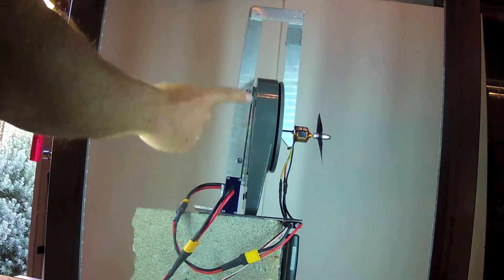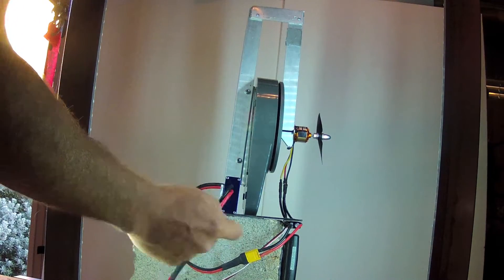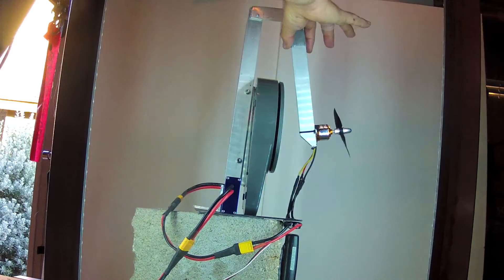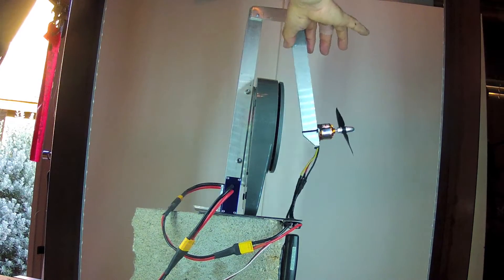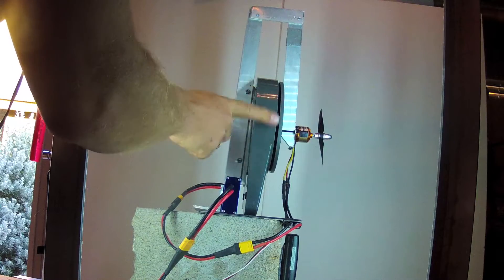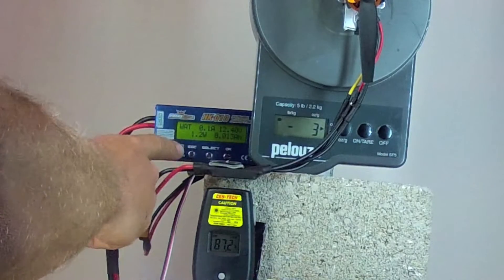Here is the side view of the test stand. Here is the wattmeter, the speed control, the infrared thermometer here, the kitchen scale, and this arm of angled aluminum which swings freely with the power plant attached so that it's able to push directly back and perpendicularly to the surface of this scale.